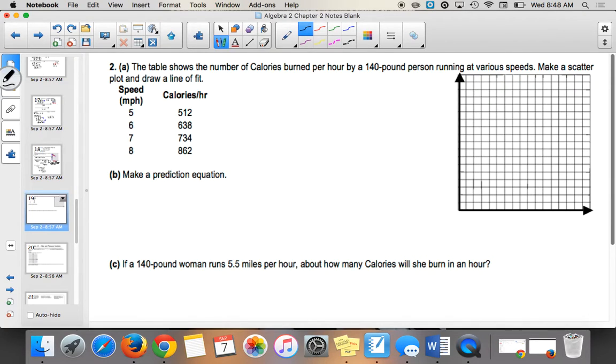So number two. It says the table shows the number of calories burned per hour by a 140-pound person running at various speeds. Make a scatter plot and draw a line of fit. We have the speed and we have calories per hour. So we're going to make the speed our x and our calories per hour our y. It's actually okay if you flip those. But your equation will be different than your friend's. So I usually do the first data set as x, the second one is y.